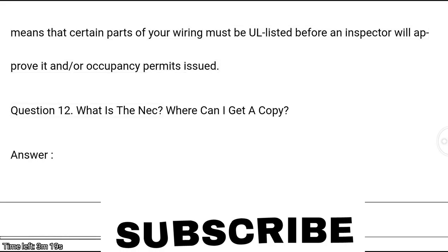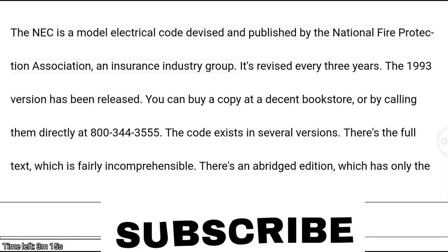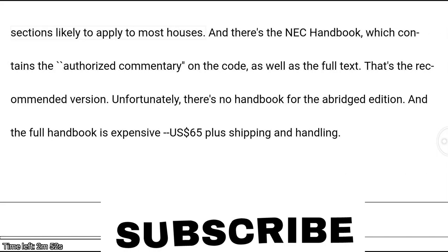Question 12: What is the NEC and where can I get a copy? Answer: The NEC is a model electrical code devised and published by the National Fire Protection Association, an insurance industry group. It's revised every three years; the 1993 version has been released. You can buy a copy at a decent bookstore or by calling them directly at 800-344-3555. The code exists in several versions — the full text, which is fairly incomprehensible, and an abridged edition with only the sections likely to apply to most houses.